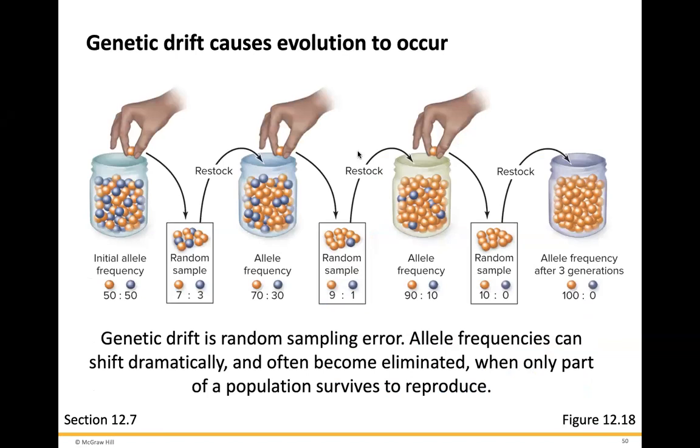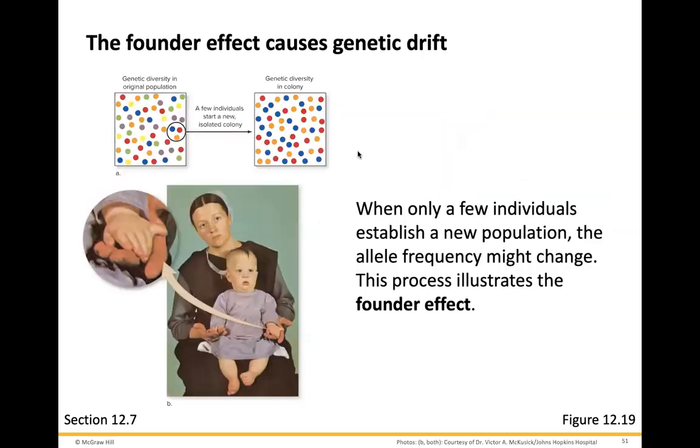Genetic drift causes evolution to occur. Genetic drift is a random sampling error. Allele frequencies can shift dramatically and often become eliminated when only part of a population survives to reproduce. For example, if you have a ball with 50 orange and 50 blue marbles and you randomly pick out 10, your random sample might be 7 to 3, giving a new allele frequency of 70 to 30. If you randomly pick again you might get 9 to 1 — you can see this genetic drift occurring. The founder effect causes genetic drift when only a few individuals establish a new population.